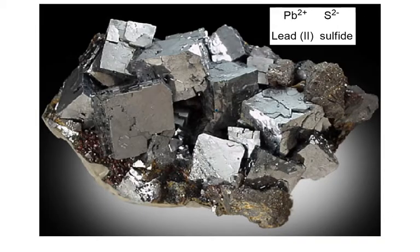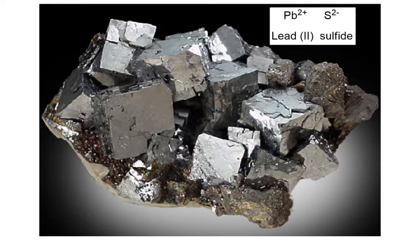Another interesting mineral found in Pennsylvania is made of lead and sulfur, or lead sulfide. It's known as galena, and it is usually gray in color. It has a metallic luster, so it looks shiny like a metal, and it's usually pretty dense - meaning if you hold a small piece in your hand, it's going to feel very heavy. Like halite, it has cubic crystals. We have mined this in Pennsylvania, usually in southeastern and central Pennsylvania.